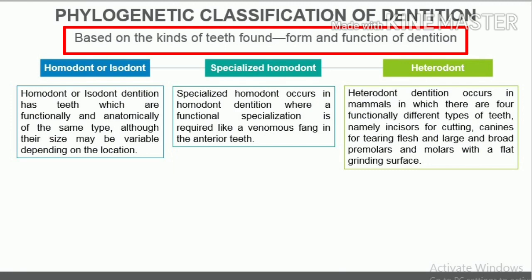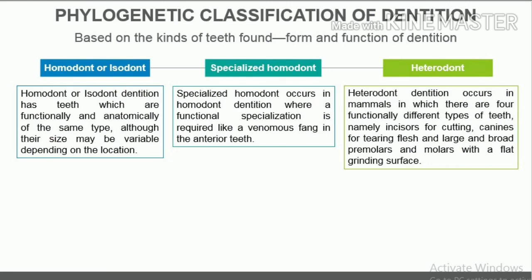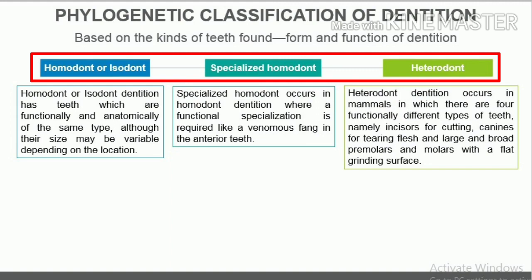Based on the kinds of teeth found — form and function of dentition — according to the form and function of teeth, there are three categories: homodont or isodont, specialized homodont, and heterodont.